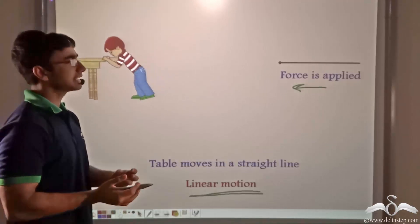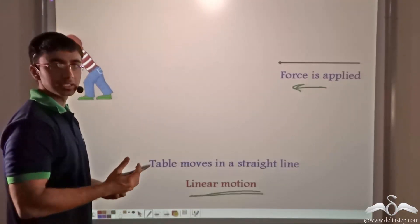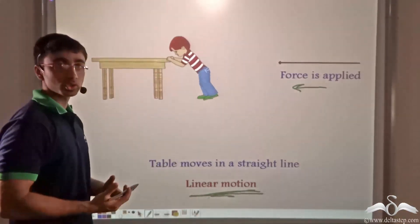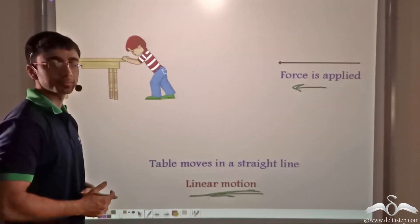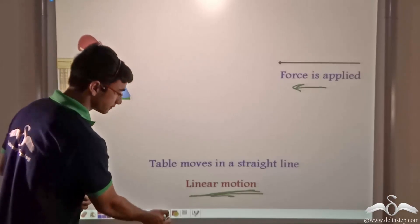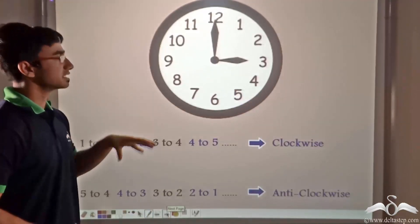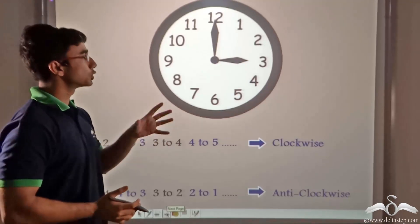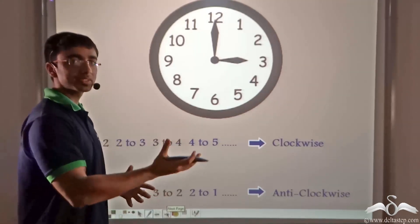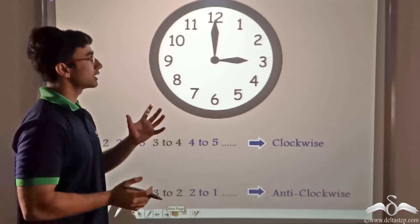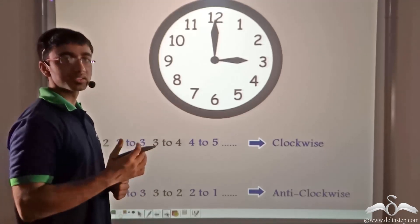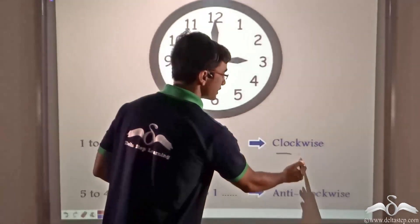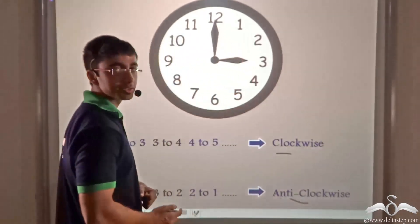Do you think that a force acting on any body causes only linear motion, or can it also cause some other kind of motion? Let us find out. In order to study about any different kind of motion, we need to talk about the analogy with a clock. We need to consider two kinds of motion: clockwise motion and anti-clockwise motion.